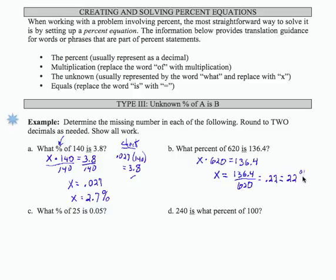I'm going to do a check. So I'm going to take 0.22, or 22% of 620, and that should equal 136.4. And if you perform that computation on your calculator, you will indeed get 136.4.